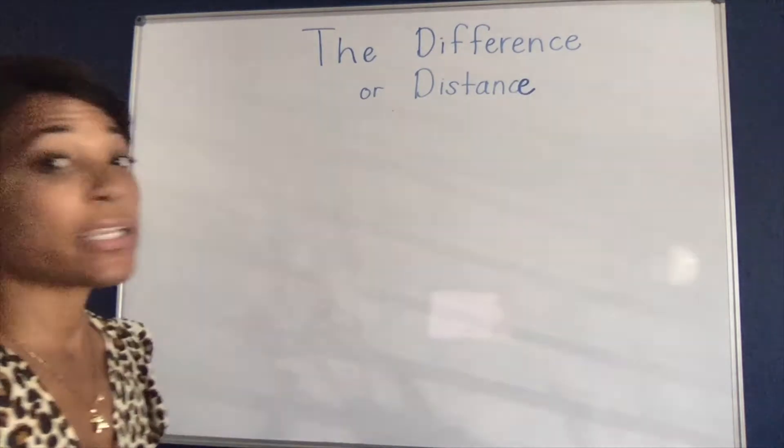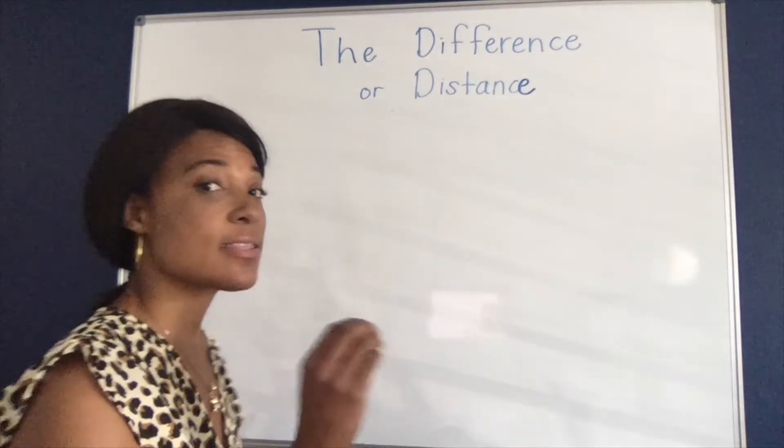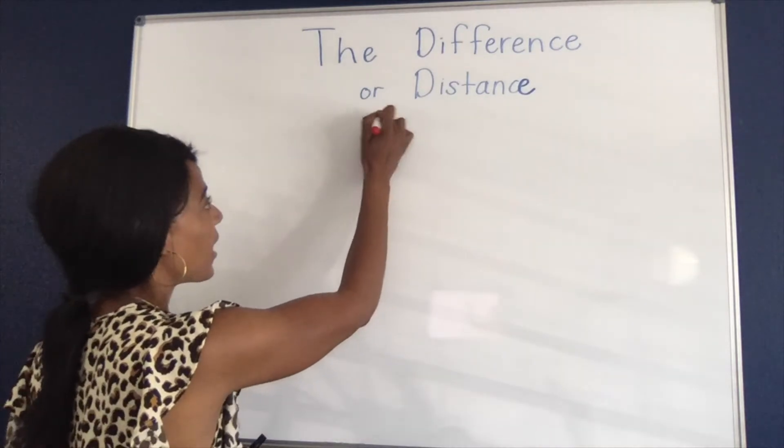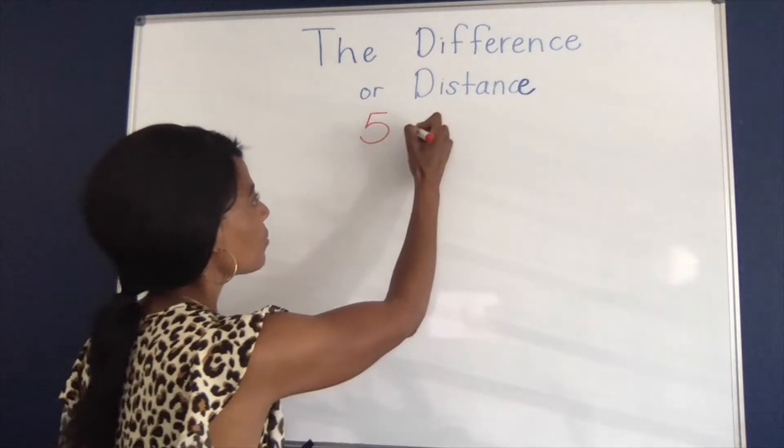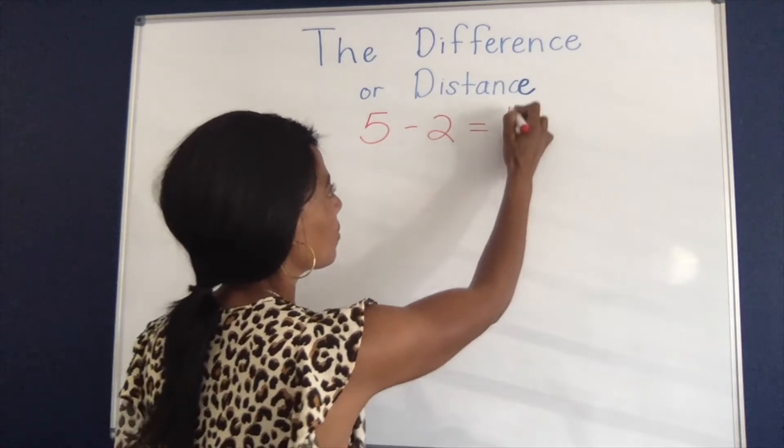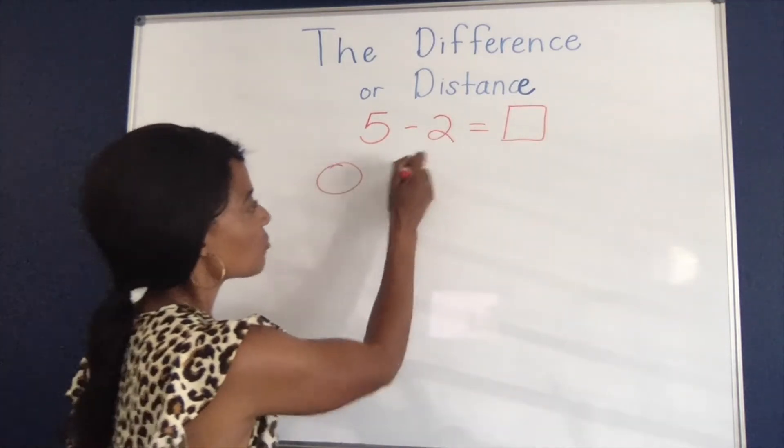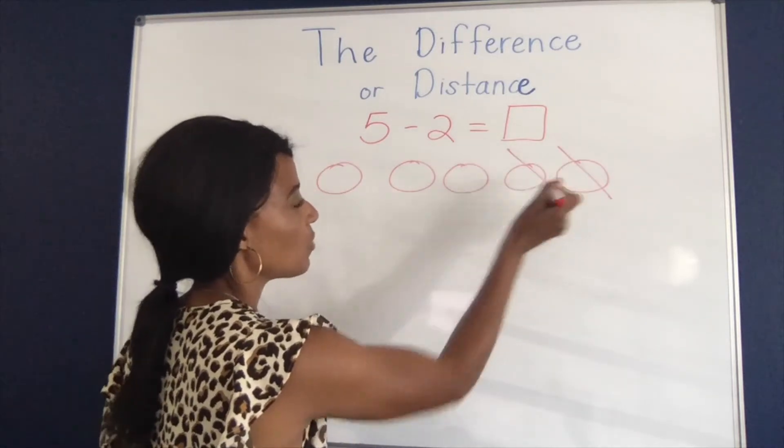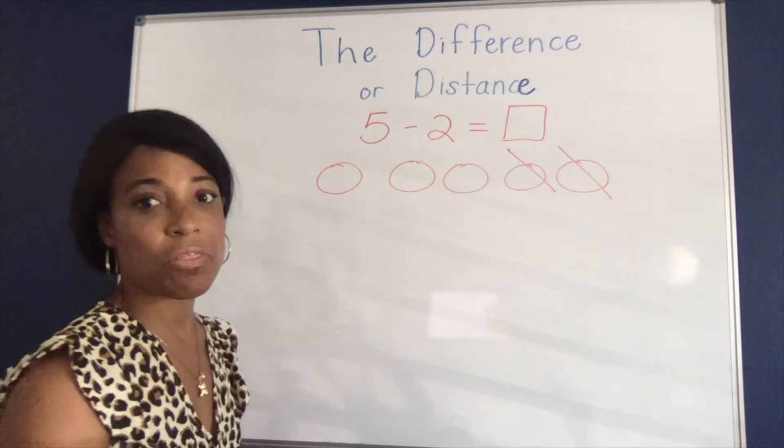Now from a very early age most kids are taught to think about subtraction as taking away. So for example, if I have five water bottles and I drink two of them, how many will I have left? They might draw out five water bottles, subtract two of them, and see that they are left with three.